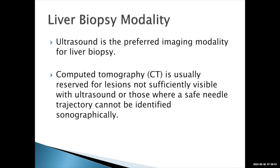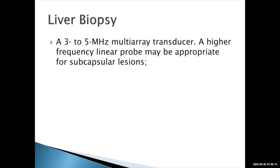Ultrasound is usually the preferred modality for liver biopsy because the liver moves as we breathe and it's easier to track the lesion in real time. CT is reserved for lesions we cannot see with ultrasound or where we cannot get a safe trajectory using ultrasound. For liver biopsy, we use three to five megahertz transducers. The lower the frequency, the deeper the penetration but at the expense of resolution. A higher frequency gives better resolution but less depth. Higher frequency probes are indicated for more subcapsular or superficial lesions.